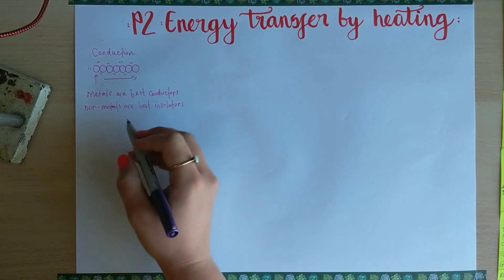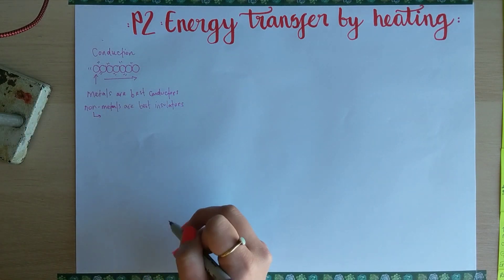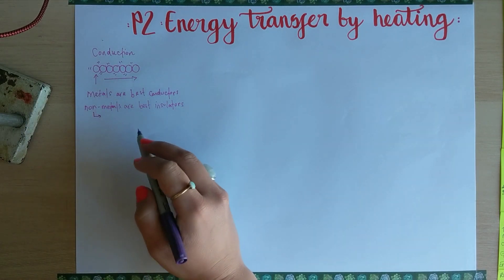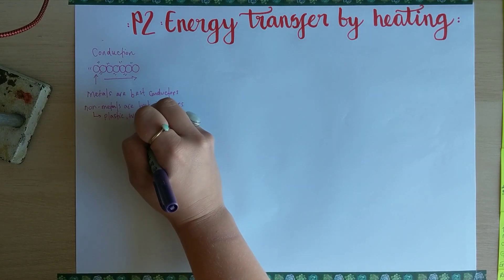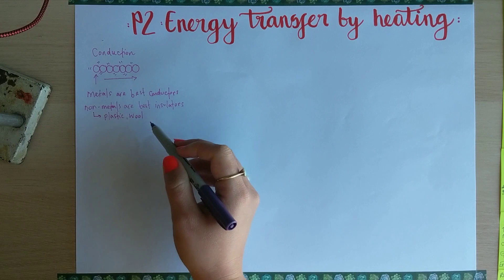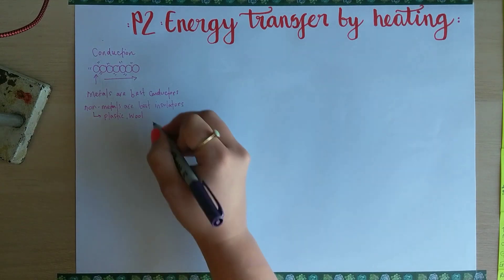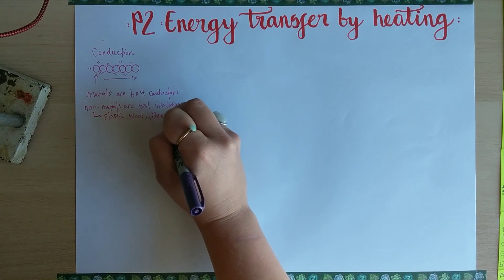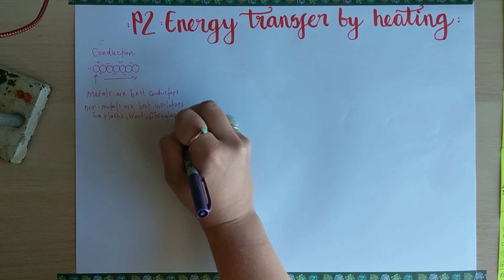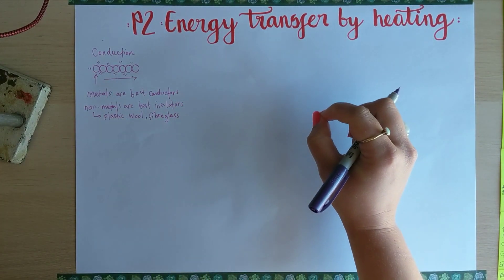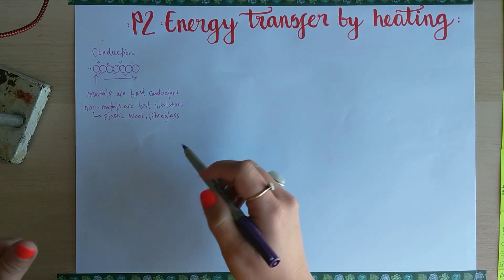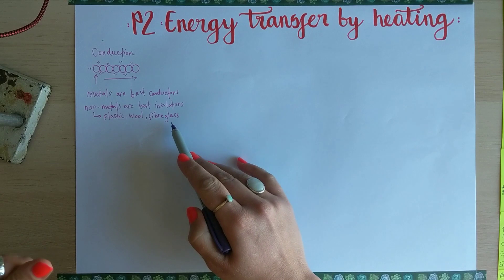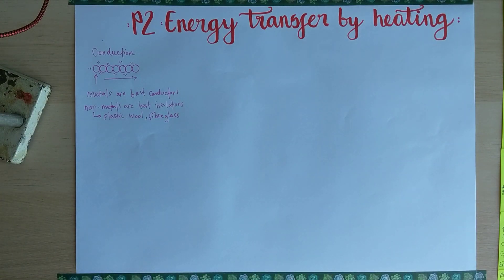In terms of non-metals, you need to be able to give some examples. You could give an example of plastic, wool — wool is something that often comes up as an insulator in this topic — or something called fiberglass, which is very thin strands of glass spun together. It looks quite like wool but it's made out of very thin glass.